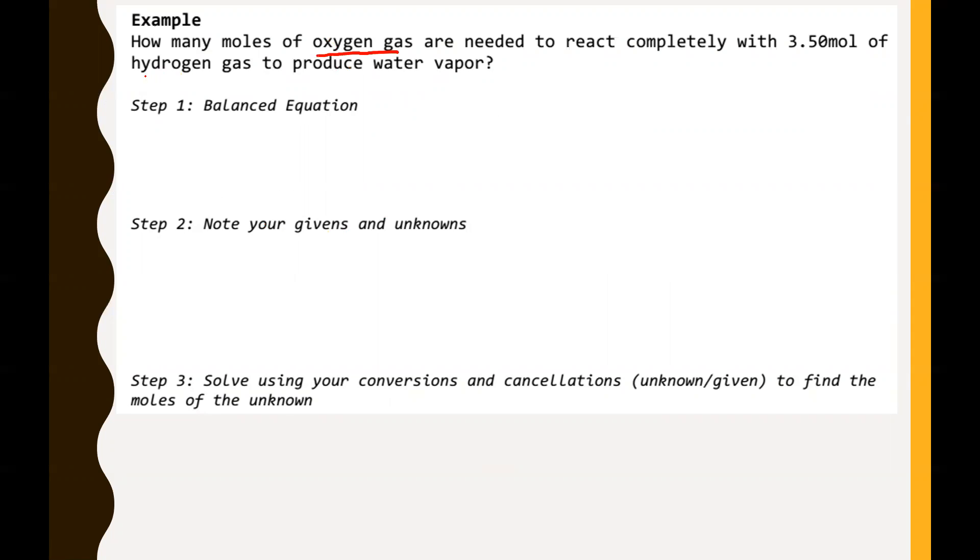How many moles of oxygen gas are needed to react completely with 3.50 moles of hydrogen gas to produce water vapor? The very first thing you should always do, step one, get your balanced equation. We're reacting oxygen gas with hydrogen gas to produce water vapor. So O2 plus H2 is going to produce water vapor, which is H2O. That's a skeleton equation because we haven't balanced this yet.